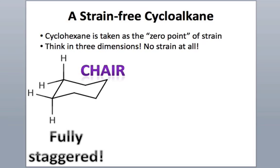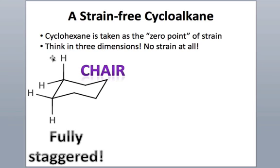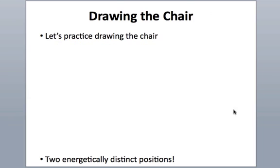Because of this puckering, it introduces some interesting stereochemical problems. The two hydrogens — one pointing straight up and down, the other kind of angled — are actually different stereochemically. So a compound with a substituent in one position could be a stereoisomer to a compound with a substituent in the other. Knowing how to draw and understanding those substituents is critical, so let's practice drawing chair cyclohexanes.